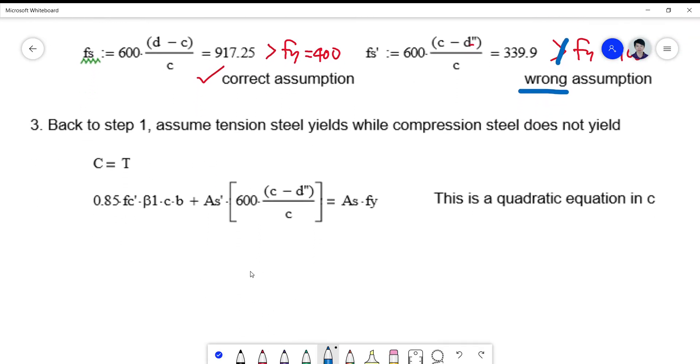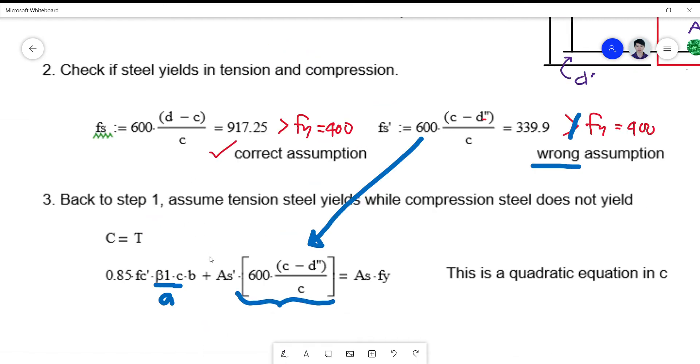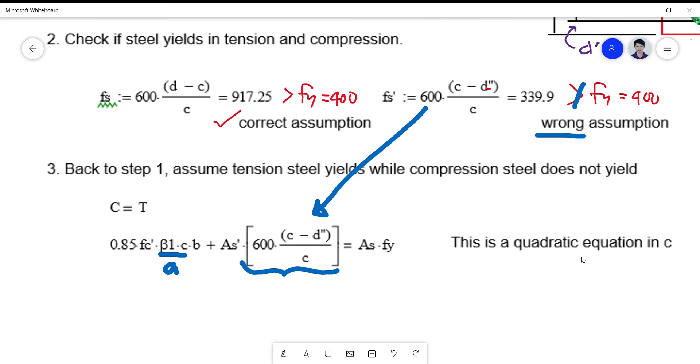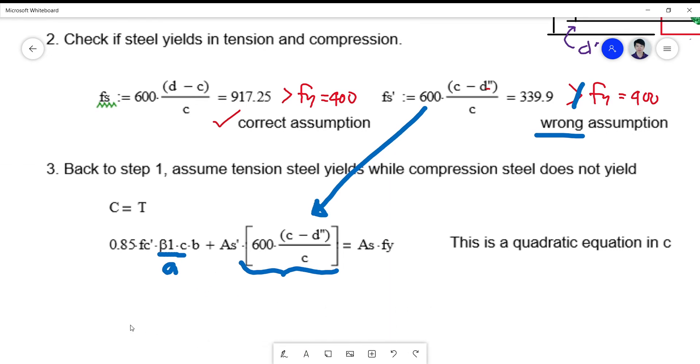Therefore, wrong assumption. We cannot proceed because the assumption is wrong. We go back to step one, which is C equals T. At this time, instead of having AS prime·FY, we plug in the formula of FS prime here. This is correct because that's correct, so we don't change this one here. If we take a look at A, A is beta 1·C. Originally in our top equation we use an A, but here because we want to solve it on the basis of a quadratic equation in C, we change A into beta 1·C and solve using quadratic formula.